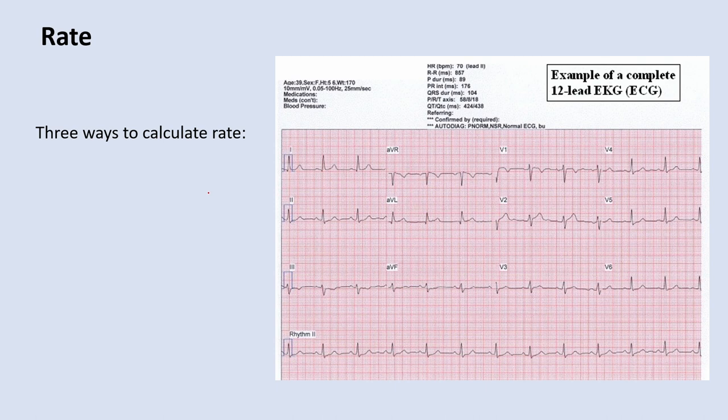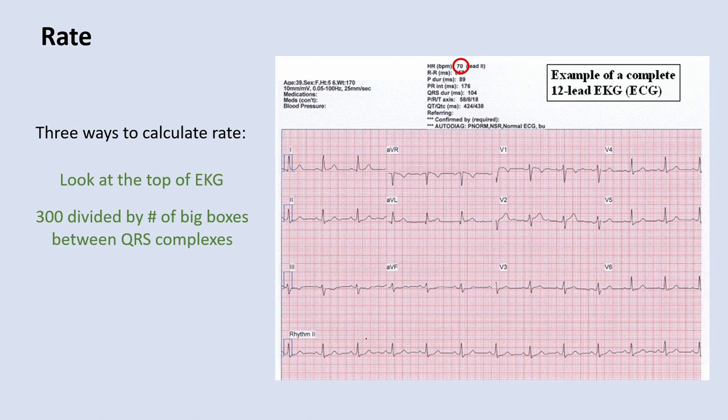The first thing we're going to look at is the rate. There are three ways to calculate the rate. The first is kind of sarcastic — just look at the top of the EKG and you can see that the heart rate is 70. But you also have to know the other two ways. One of the most common is to count the number of big boxes between each QRS complex. If you count about four big boxes, you take 300, divide by four, and get an approximate heart rate of about 75.